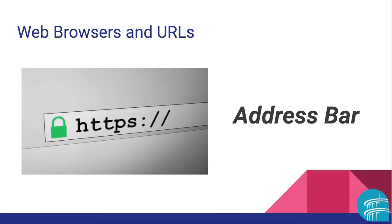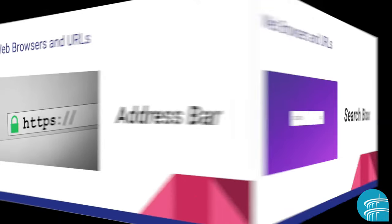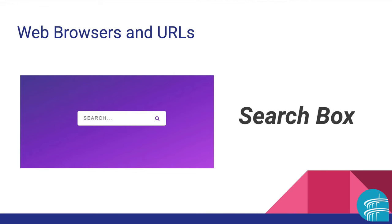The address bar is the area where you type in the address of the website you want to locate, or keywords if the exact name is not known. Usually the address begins with www.something. The search box is the area used to enter keywords when the exact web address is unknown. Some browsers only have a single search box that functions as both the address bar and the search box.